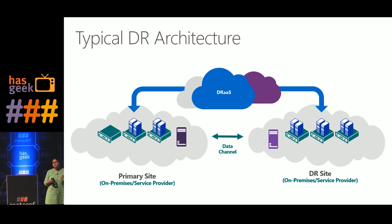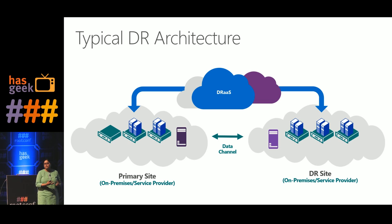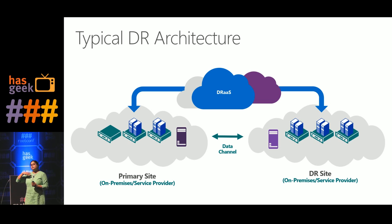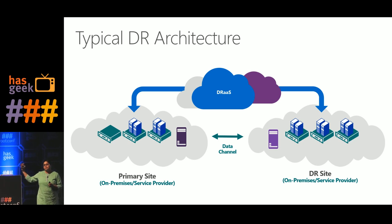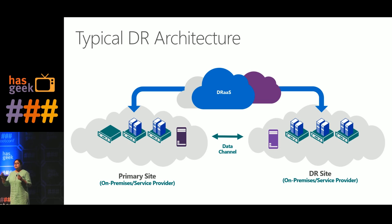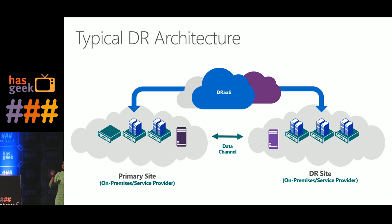It is very critical, and that is why many organizations don't attempt it — but it is very important if your business applications need to keep working. The data channel could be anything: if you have SAN on the primary site, you can choose SAN-level replication, or use a network channel. For large datasets — terabytes or petabytes — you typically use an offline method: copy everything to a big hard disk, bring it to your DR site, load it first, and then do sync replication over the network.